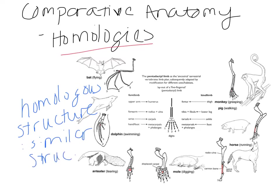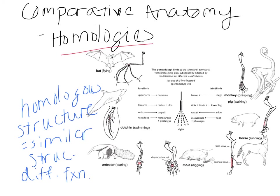Homologous structures were built the same but are used for different purposes — similar structure, different function. The diagram here shows examples of this called the pentadactyl limb. You've got a bat, a dolphin, an anteater, a mole, a horse, a pig, and a monkey. Humans have examples of this as well in our arms and legs. All of these have the same basic structure: one larger bone, then two bones, then a set of smaller bones, and then the ones that form the digits.